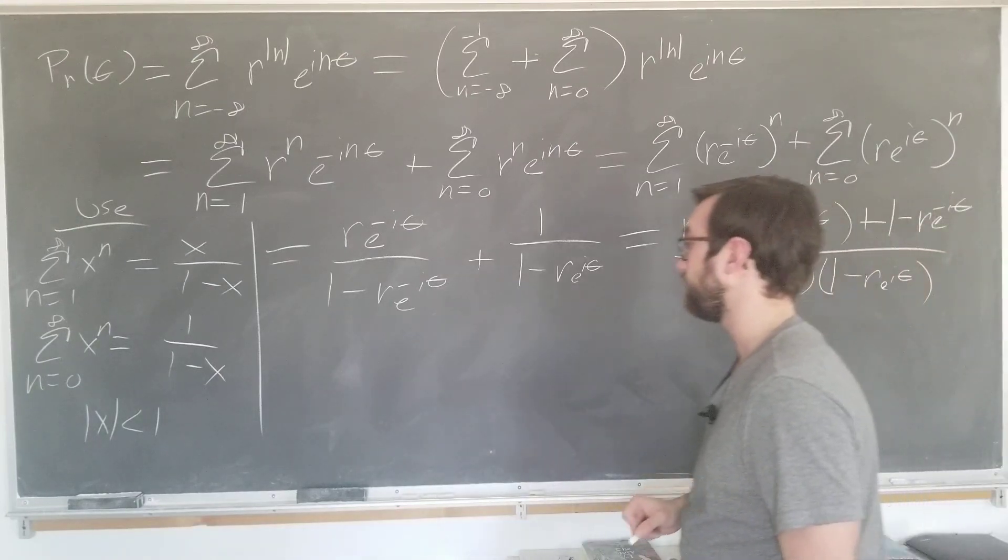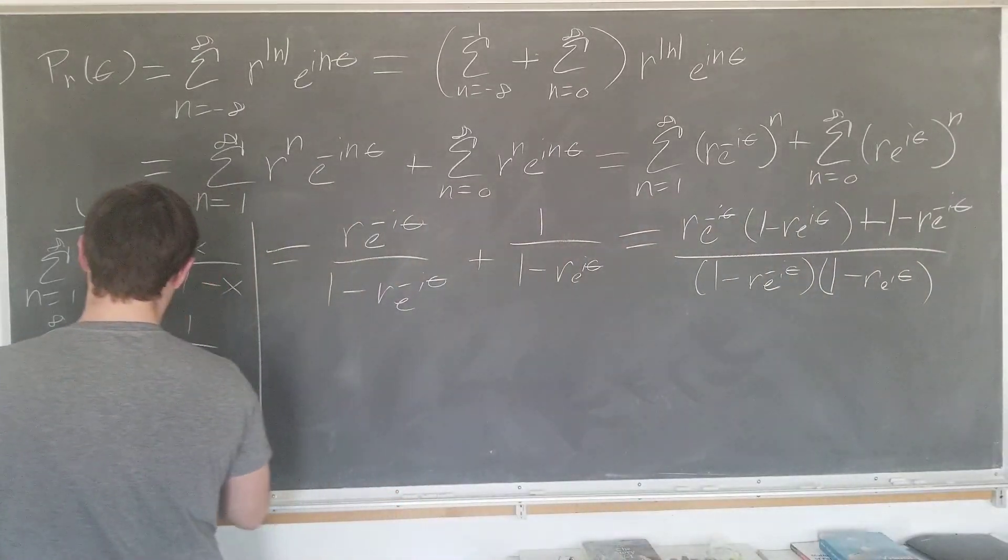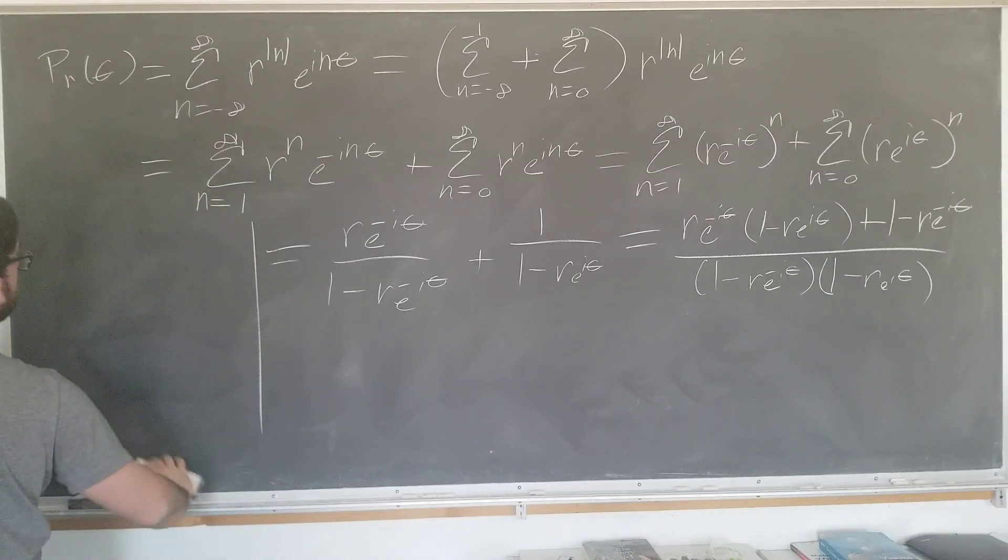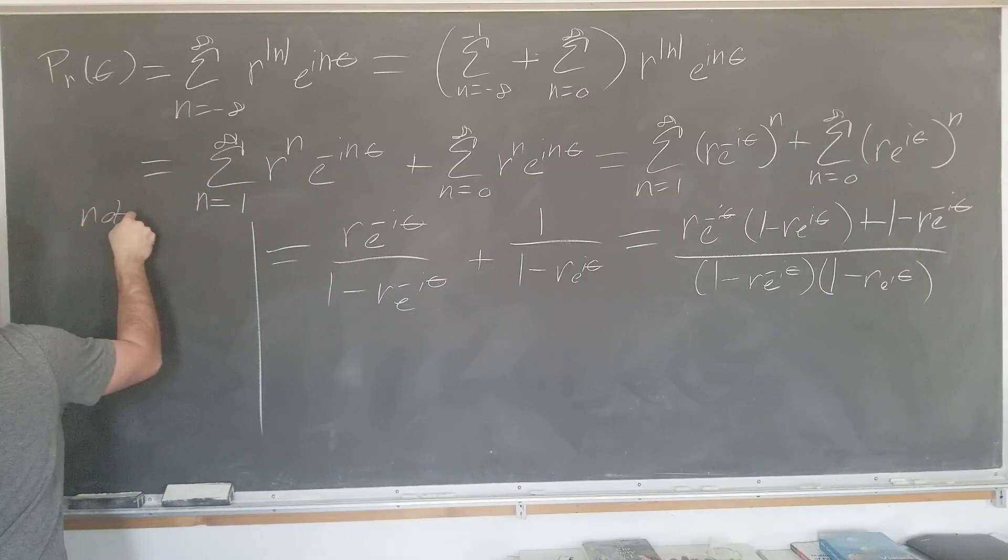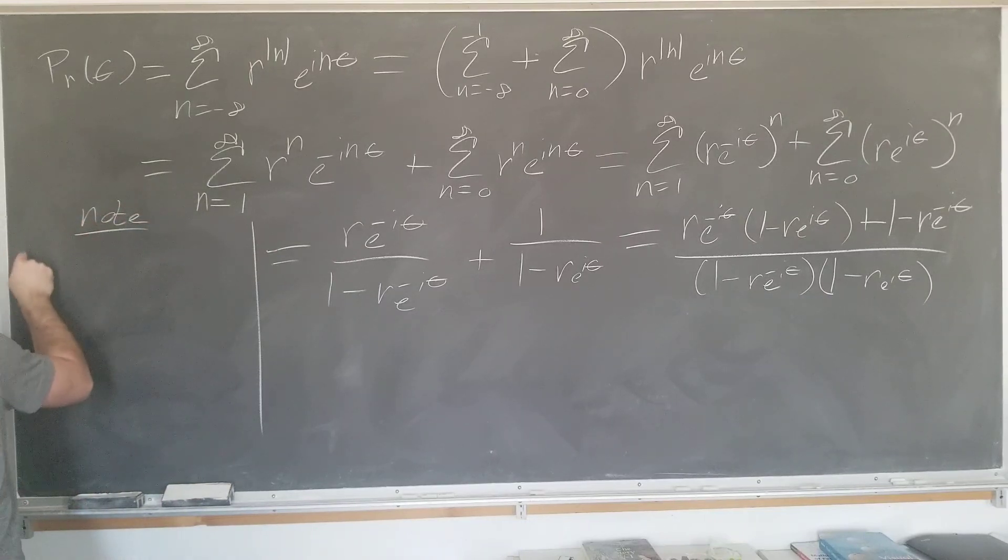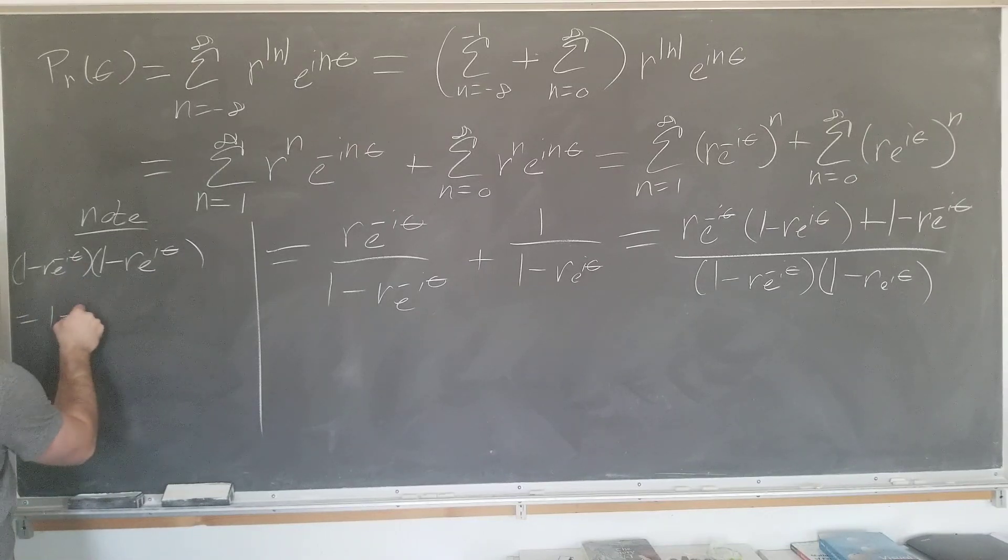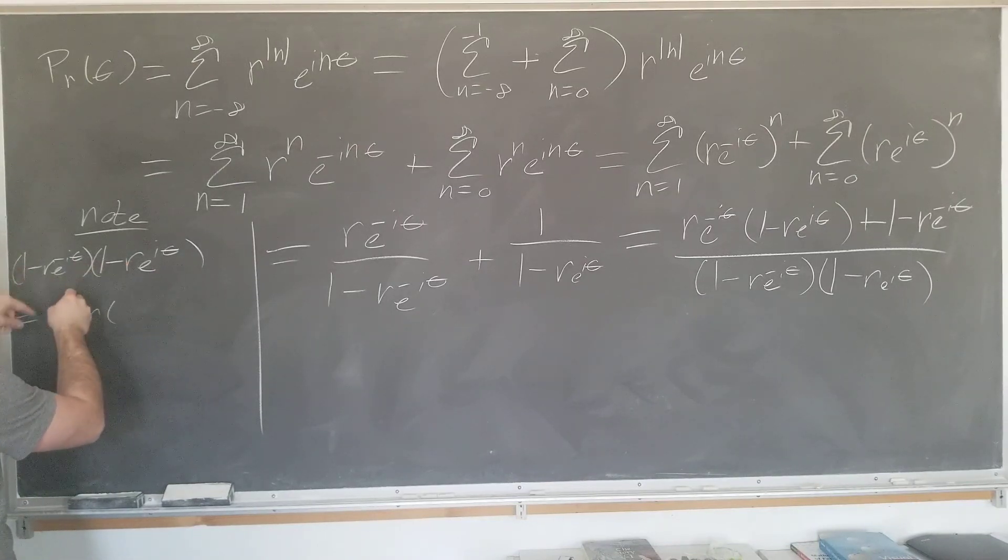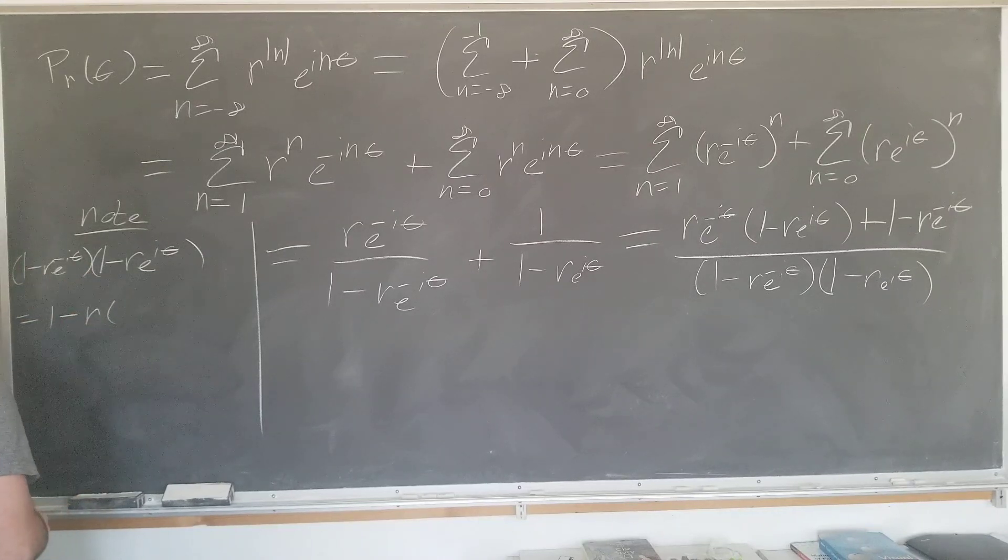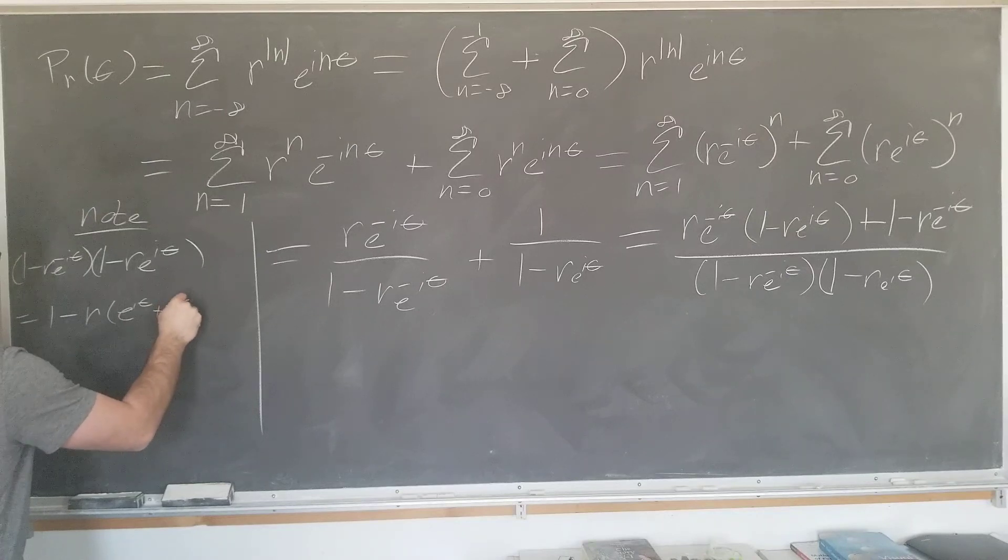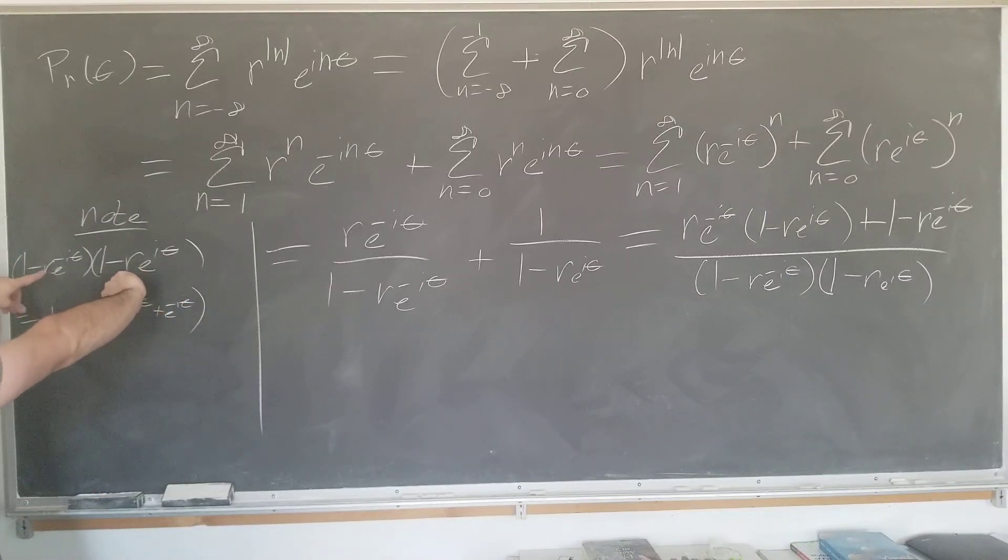And now we're going to take a side note and evaluate the denominator. So when we multiply this out, 1, and we're going to do the cross terms, we have this cross term and this cross term. So they both have a minus sign. And the final term, these two terms multiplied.